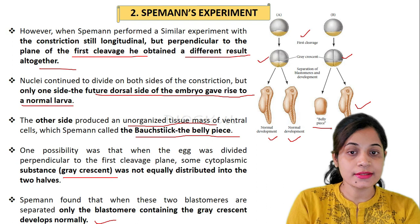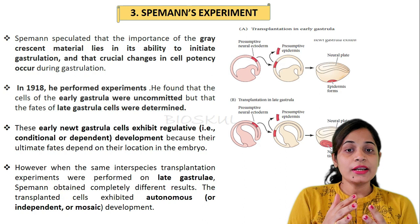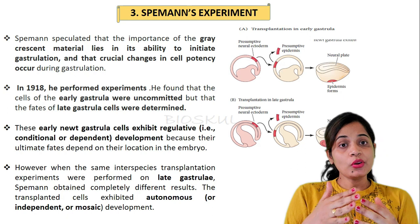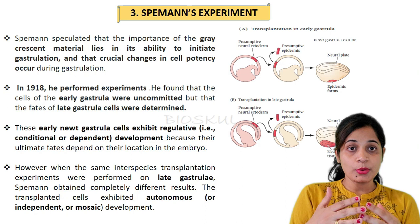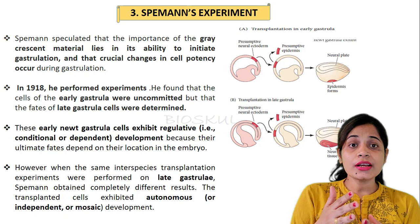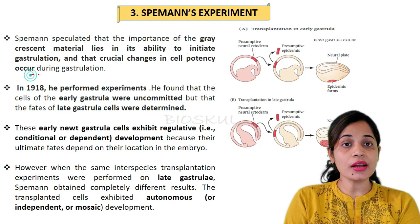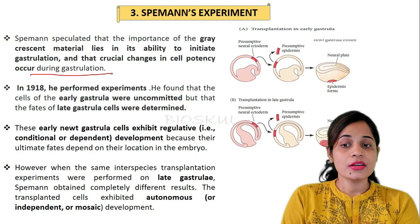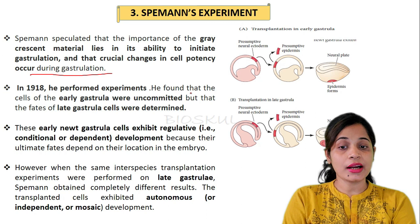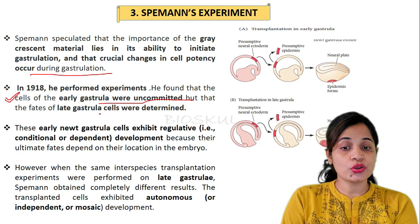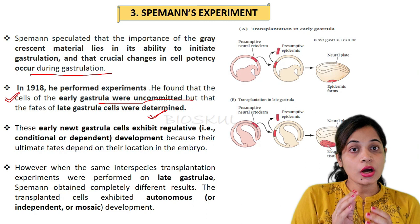In the third experiment, Spemann speculated that the importance of the gray crescent material lies in its ability to initiate gastrulation. Embryonic induction depends on the interaction of cells arranged during gastrulation, and crucial changes in cell potency occur during this process. In 1918 he performed an experiment and found that only early gastrula cells are uncommitted, whereas the fate of late gastrula cells is determined.